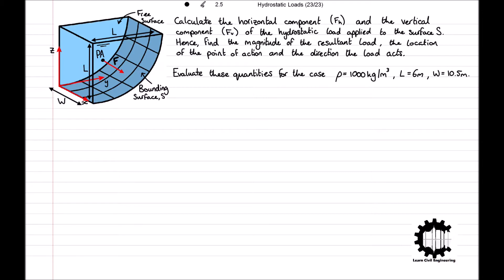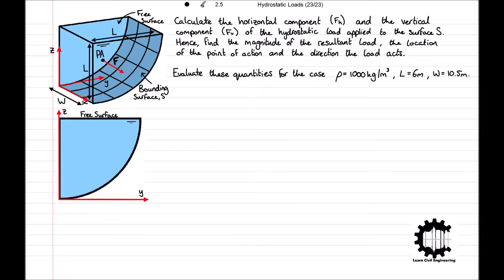Before we start any calculations it is always a good idea to illustrate the problem in the easiest possible way to understand. We can visualize this scenario better with a diagram showing a side view of the surface in the YZ plane. Note that the water has a width of W into the page. The volume of liquid forms a quadrant with radius L, so the vertical surface and free surface both have lengths of L. The hydrostatic load applied to surface S has a point of action at PA and can be decomposed into horizontal and vertical components FH and FV. For convenience we introduce the H coordinate direction, which is the depth below the free surface.